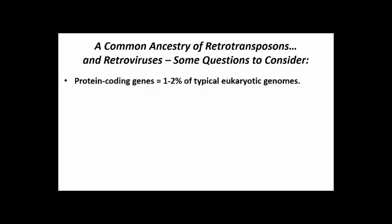Alright, let's turn our attention to some observations and questions that bear on transposon, indeed on genome evolution. For example, genes for proteins typically represent only 1 or 2% of a eukaryotic genome. So a question is: is most of the non-coding DNA in a genome non-essential to life?